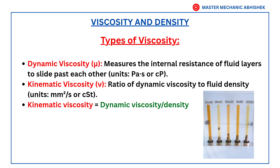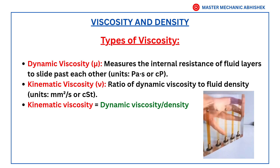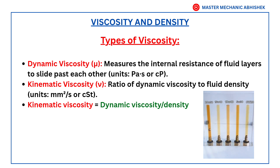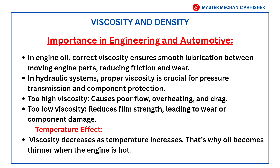Dynamic viscosity measures the internal resistance of fluid layers to slide past each other. Units: Pa·s or cP. Kinematic viscosity (ν) is the ratio of dynamic viscosity to fluid density. Units: square millimeter per second or cSt. Kinematic viscosity equals dynamic viscosity divided by density.